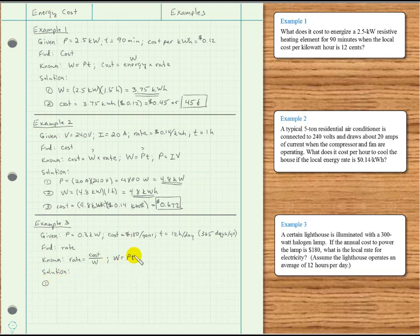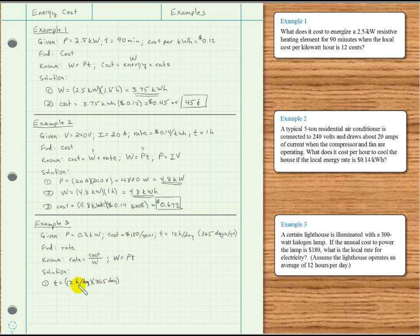First, work out the time: 12 hours per day times 365 days per year. Days cancel and we're left with hours. 12 times 365 gives us 4,380 hours. So during the year, the lighthouse operates for about 4,380 hours.